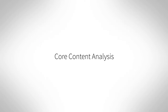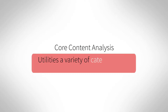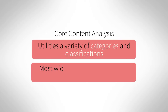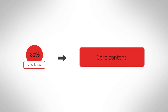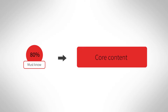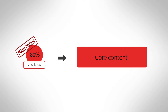Core content analysis utilizes a variety of categories and classifications. Perhaps the most widely used is one that divides content into three categories. Core content should fall into these categories so that approximately 80% of the course content is the core content of the course. The must-know content means content that is necessary to have a command of in order to be successful in future studies. This should be the main focus of the course and the intended learning outcomes should be composed with this content in mind.